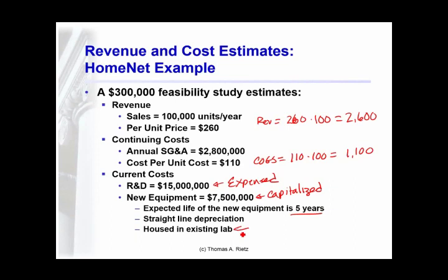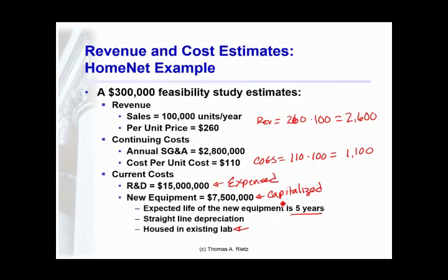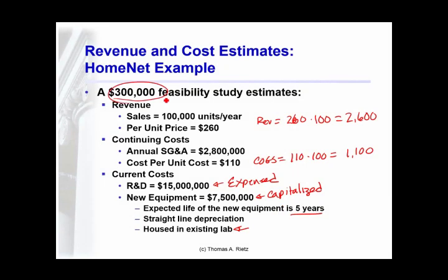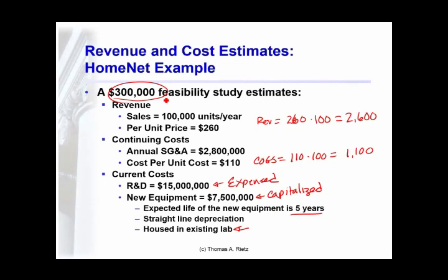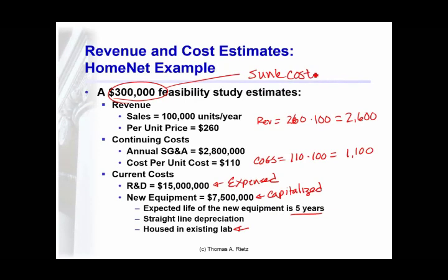In addition, we're going to house this in an existing laboratory. There are three things about this that are important beyond the simple revenues and costs. One of them is that we're going to look at incremental cash flows — that is, cash flows that change as a result of the decision. Whether they decide to do the HomeNet project or not, they will have spent the $300,000 for the feasibility study. That's a sunk cost — it's irrelevant to the decision moving forward and is not included in the cash flows.